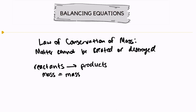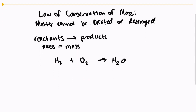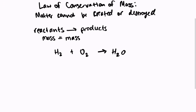So let's look at a really basic formula. First, we have H₂ plus O₂ yields H₂O. Some strategies for balancing equations: the first thing that you need to do is count the atoms that you have on either side of your equation.